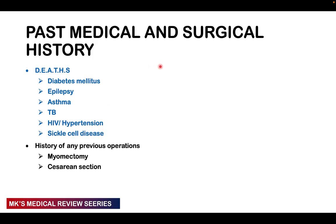For past medical and surgical history, use the DEATHS framework: Diabetes, Epilepsy, Asthma, TB, HIV, Hypertension, Sickle cell disease. Also ask about a history of twin pregnancies in prior pregnancies, and any previous operations such as myomectomy or caesarean section. For myomectomy, ask the indication and any complications. For a C-section, ask the indication, when it was done, the hospital stay afterward, and any complications incurred.